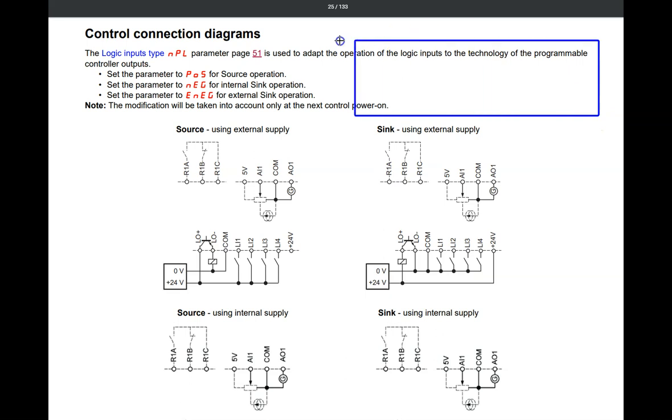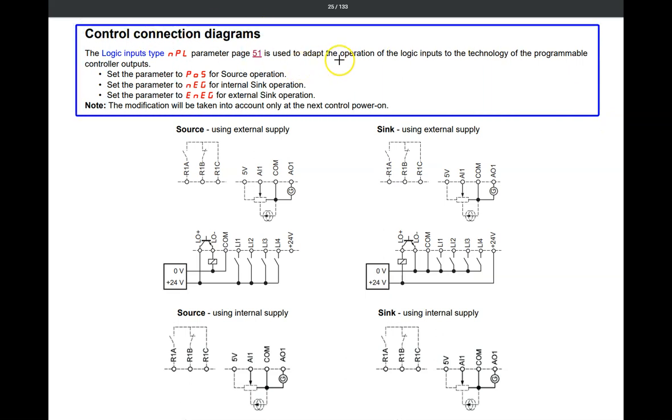So what they allow you to do is they allow you to adapt your logic inputs to an external control system like a programmable controller. So you can set them for source or sync. It shows you the wiring diagrams to adapt. Now, Schneider Electric does not use a dip switch to select between sync and source. You have a parameter and it shows you where that parameter is.